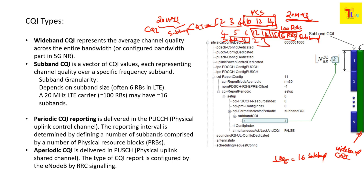Subband CQI reporting is especially effective for large bandwidths — for example, 100 MHz in 5G. Instead of reporting a single wideband CQI for the complete 100 MHz, the UE can report CQI values for portions (subbands), making the report more efficient and allowing the eNodeB or gNodeB to schedule UEs more effectively.